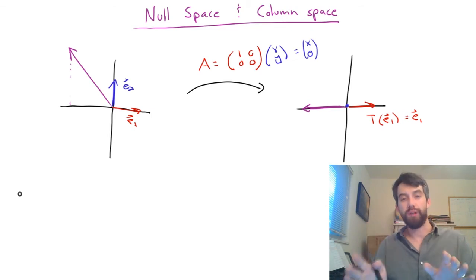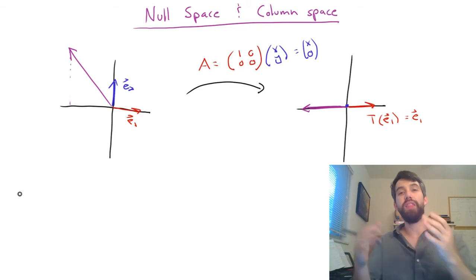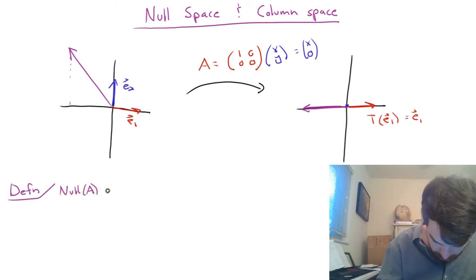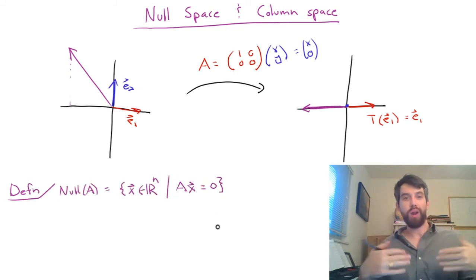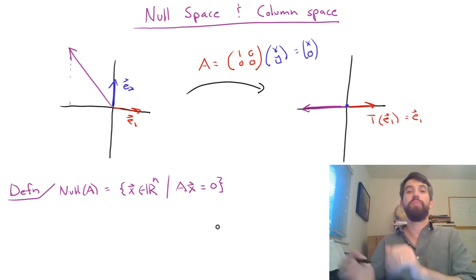All right. So now let's talk about the null space. The null space is all of the vectors in the domain that end up getting mapped to zero. So when I write it in this set builder notation, I'm talking about all X's in Rn. Note that Rn is the domain, it's the starting point for my transformation, such that they're going to be mapped by zero or Ax is going to be equal to zero.